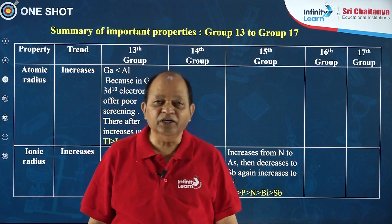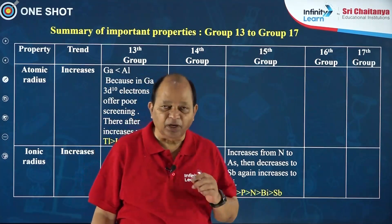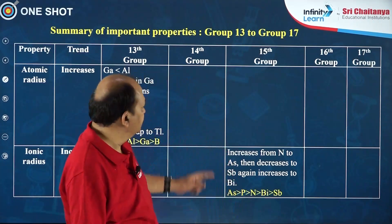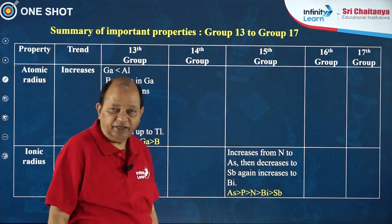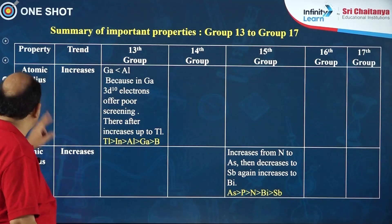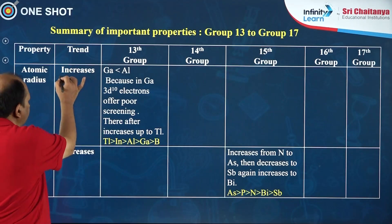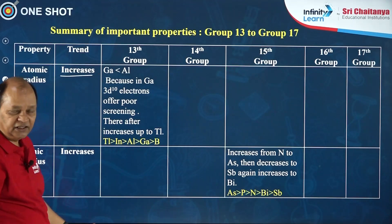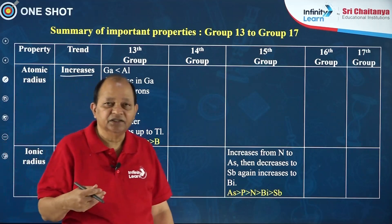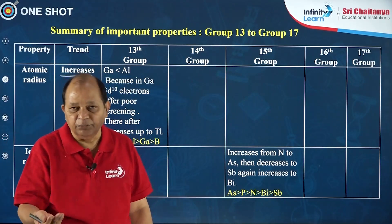Hi students, now I am going to explain a summary of important properties of different groups, from group 13 to group 17. The first property we are going to discuss is atomic radius. You know that the trend down the group is that it increases — the reason is simple: down the group atomic number increases, more and more shells are added, so the atomic radius increases.